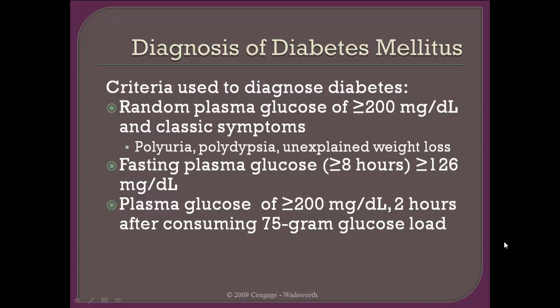Criteria used for diagnosis of diabetes include: a random plasma glucose test indicating levels greater than or equal to 200 mg/dL; fasting plasma glucose levels still greater than 126 mg/dL — meaning after eight hours of eating nothing, glucose is still above 126, which is a strong indication of a problem; and plasma glucose greater than or equal to 200 mg/dL two hours after consuming a 75-gram glucose load during a tolerance test.